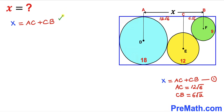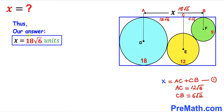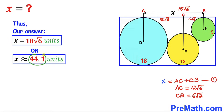Now for our final step, let's return to equation one: x = AC + CB. Substituting the values we found, x = 12√6 + 6√6 = 18√6 units, which is approximately equal to 44.1 units. Thanks for watching and please don't forget to subscribe to my channel for more exciting videos.